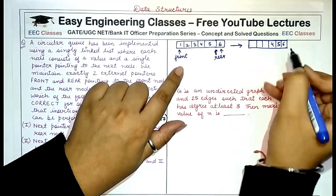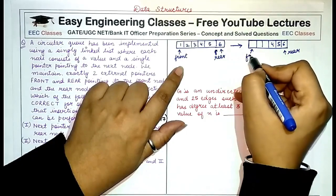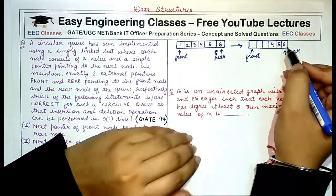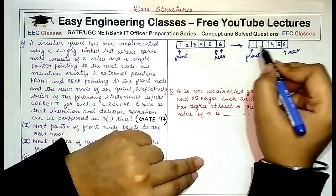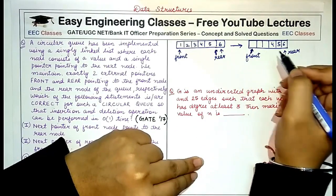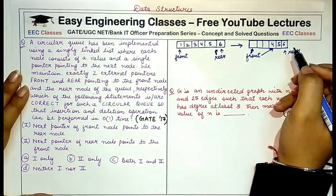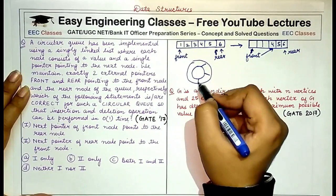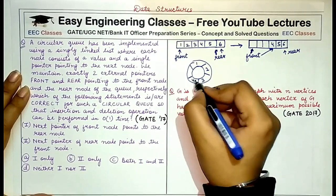Now if this is the maximum capacity of the queue and we have reached a point where rear points to the last location, I won't be able to insert any other element — even if more space is available at the front. This problem was solved by the circular queue.